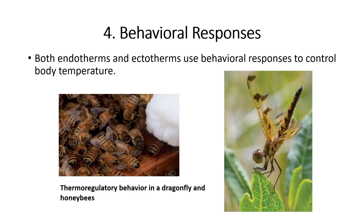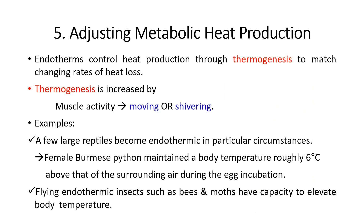Number four — behavioral responses: both endotherms and ectotherms use behavioral responses to control body temperature. For example, honeybees in cold weather increase heat production by huddling together to retain heat, while in hot weather they cool the hive by transporting water. A dragonfly uses the obelisk posture to minimize body surface exposed to the sun, and frogs move to cooler areas or turn in another direction when they feel hot.